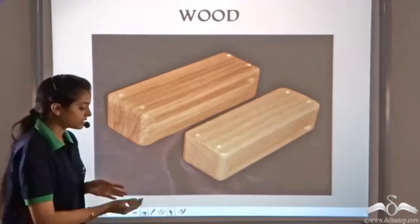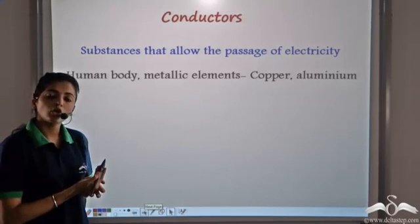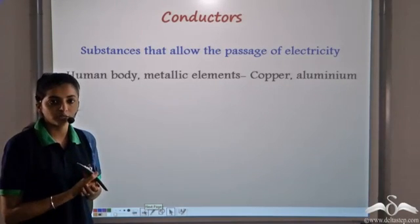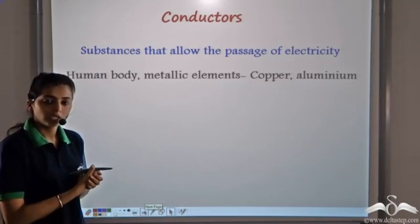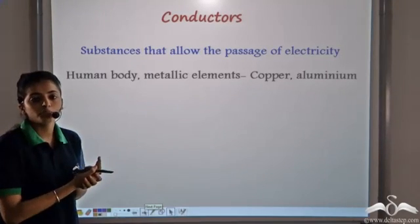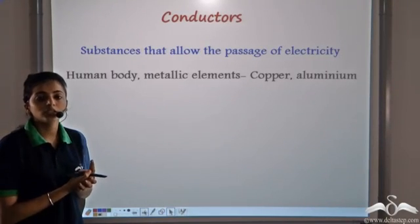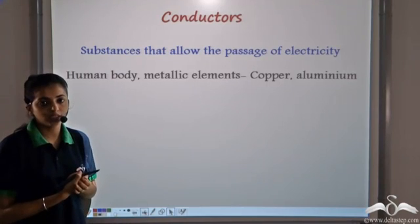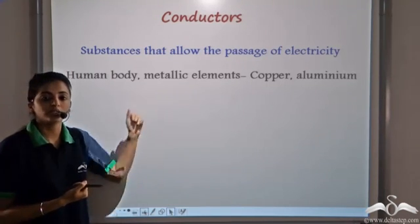So the substances that allow the passage of electricity or allow electricity to flow through them are known as conductors. Examples: human body, all metals like copper, aluminium, etc. They all allow the passage of electricity and therefore they are all conductors.